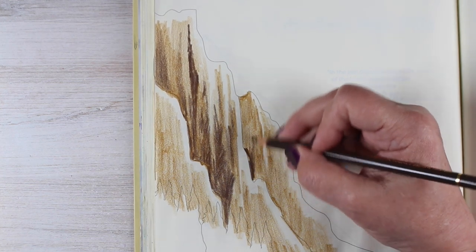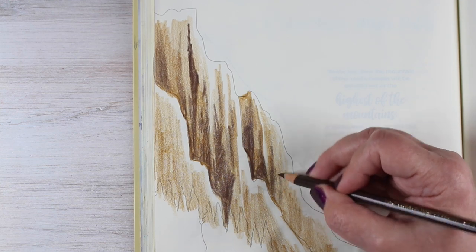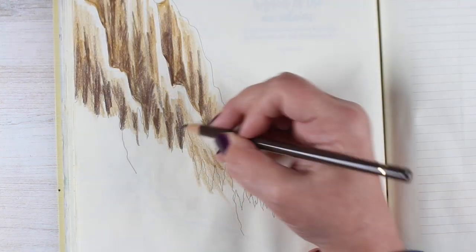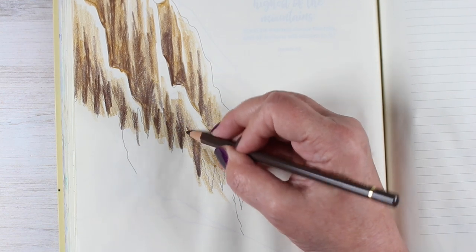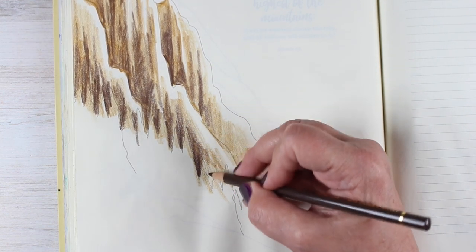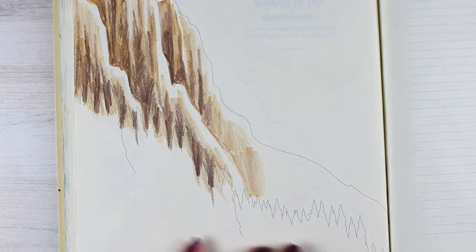Notice what happens when I put the dark color next to the highlight on the central mountain. I can build up layers so that I have one mountain in front of another mountain in front of another.